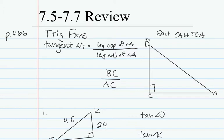We begin with the tangent ratio. When we have a ratio, we have a fraction. The tangent of an angle is equal to the ratio of the leg opposite over the leg adjacent to the angle. So the leg opposite of angle A is BC, and the leg adjacent is AC.